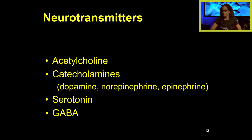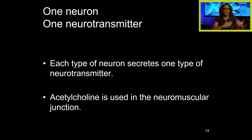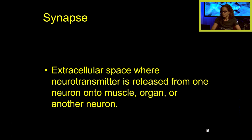Some examples of neurotransmitters are acetylcholine and catecholamines like dopamine, norepinephrine, and epinephrine, serotonin, and GABA. Throughout these lectures we're going to learn how the different neurotransmitters work in the body. Each type of neuron secretes one type of neurotransmitter — a good example is acetylcholine, which is used in the neuromuscular junction. A synapse is the extracellular space where the neurotransmitter is released from one neuron onto a muscle, organ, or another neuron.